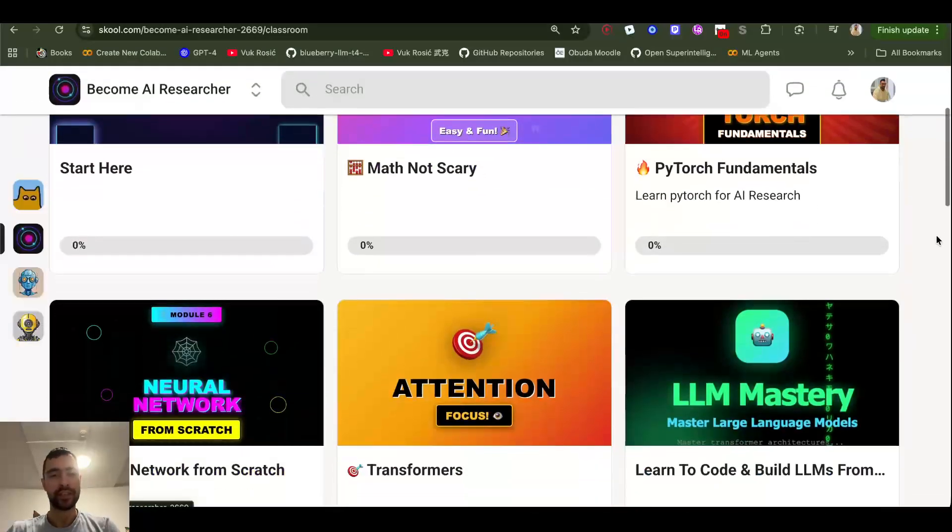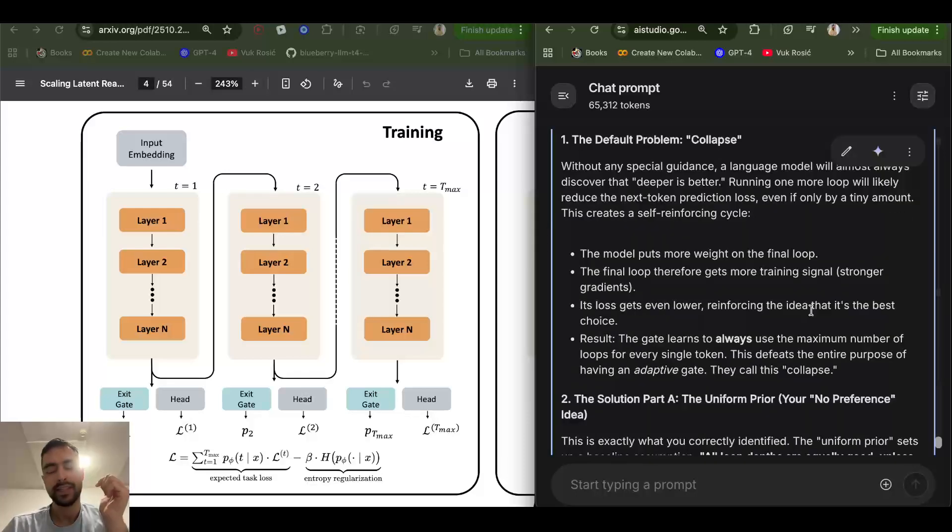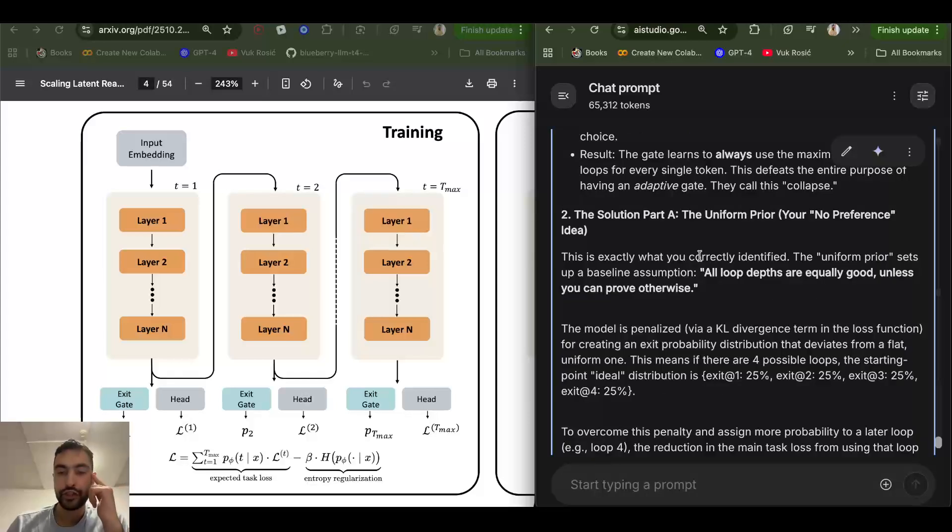Well, to understand that, we need to understand this innovation of exit gate. And they say that training this is tricky because a lot of the times, if it's not trained properly, it will almost always exit immediately, or it will use all of the possible loops, maximum possible loops. Join my school community to become AI researcher, link below the video. The first problem they would encounter is simply if you run more loops, the output token will be better. But we don't want to run more loops because that costs more compute.